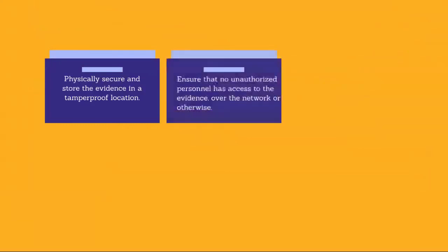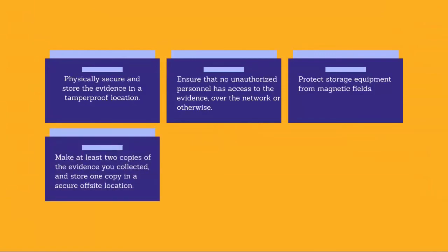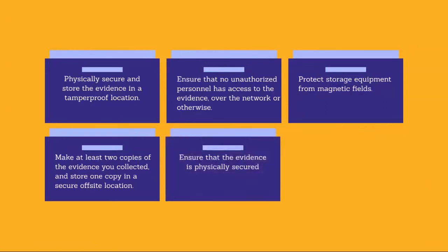Best practices for data storage and archival include: physically securing and storing the evidence in a tamper-proof location; ensuring that no unauthorized personnel has access to the evidence over the network or otherwise; documenting who has physical and network access to the information; protecting storage equipment from magnetic fields; using static control storage solutions to protect storage equipment from static electricity; making at least two copies of the evidence and storing one copy in a secure off-site location; and ensuring that the evidence is both physically secured — for example, by placing it in a safe — and digitally secured — for example, by assigning a password to the storage media.